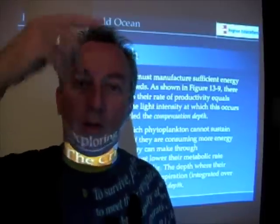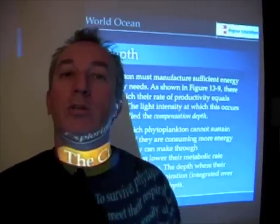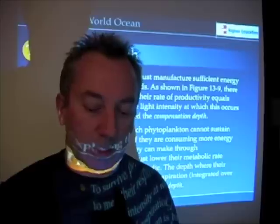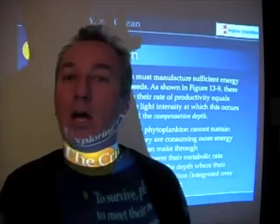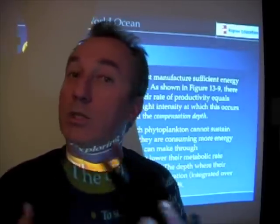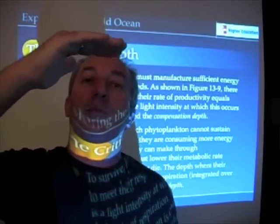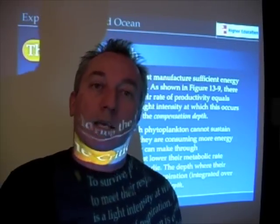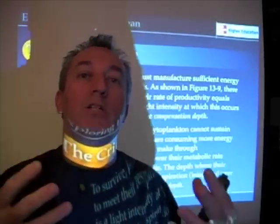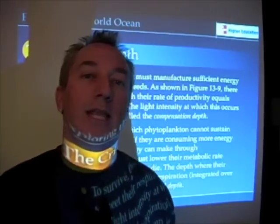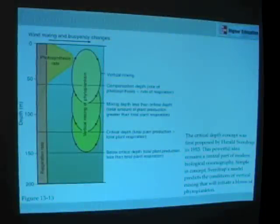This is an idealized excursion through the water column based on the mixed layer depth. We can do the same thing for the rate of respiration. As that phytoplankton cell is moving from the surface to depth and back again, it also undergoes respiration to meet its metabolic needs. The deepest depth to which a phytoplankton cell can be mixed through vertical mixing, at which its total production equals its total respiration, is called the critical depth.